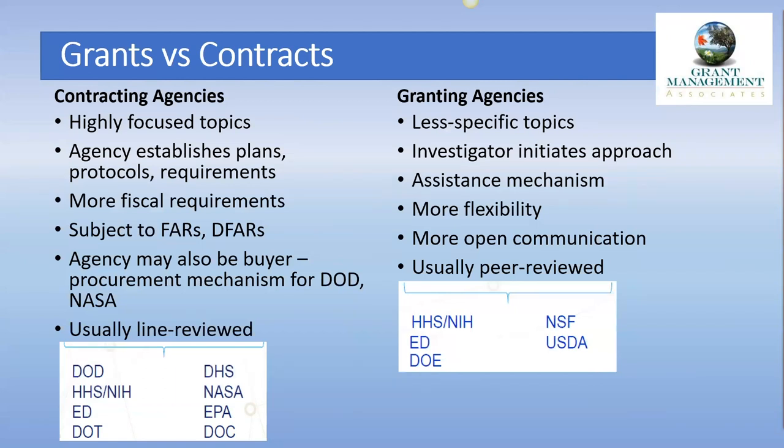One of the nice things about SBIR is that with federal procurement there's normally a competitive aspect to most procurement processes, but if your product is selected through a Phase 2 award, you basically don't have to compete with other entrepreneurs to get your product purchased by the agency. The SBIR award in fact acts as a competitive mechanism to avoid future competition.